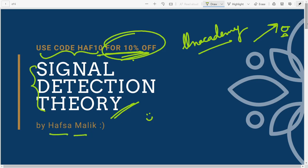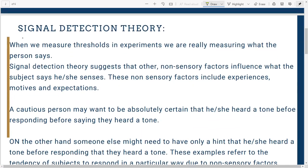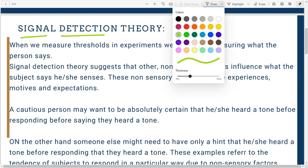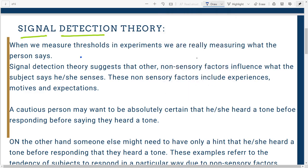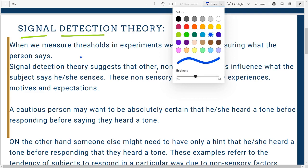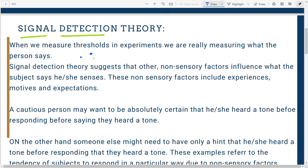I'm Hafsa and I'm going to tell you about Signal Detection Theory. You've heard about just noticeable difference, absolute threshold, and subliminal perception. What we actually measure is not what people see, but what they say they see. It's what the person says they saw rather than what they actually saw.